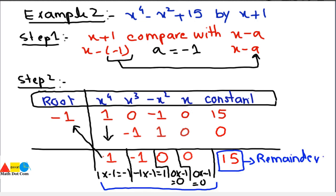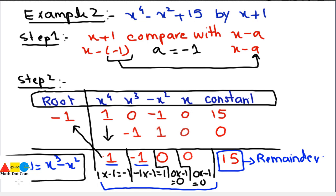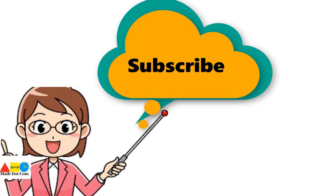The synthetic division ends. The remainder is 15. For the quotient, the power of x is one less than 4, so it starts from x³. The quotient Q(x) = x³ - x² and the remainder R = 15. This was all about how to divide two polynomials using synthetic division, which is easier than the long division method.